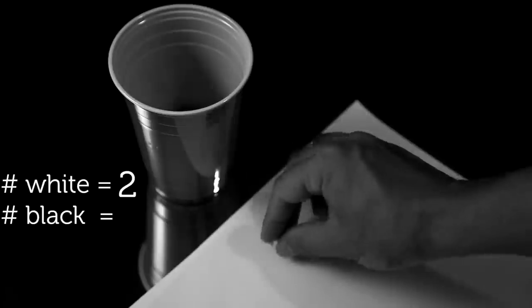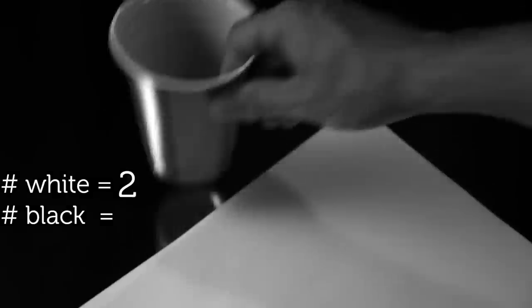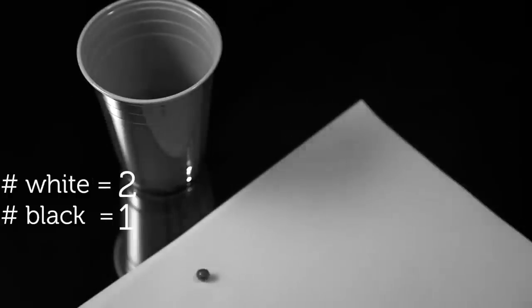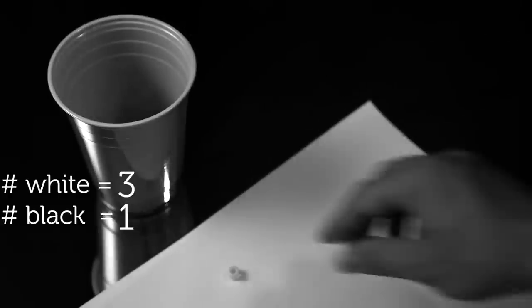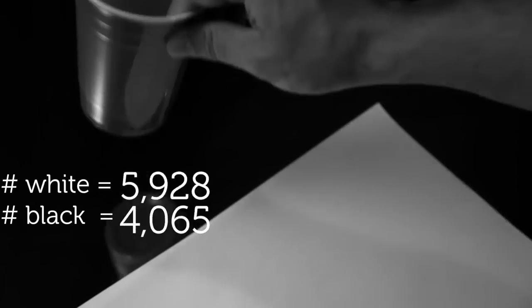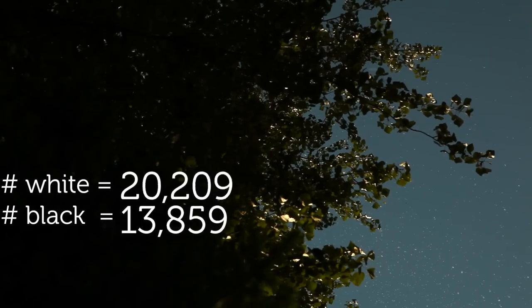He went on to prove that the expected value of white versus black observations will converge on the actual ratio as the number of trials increases, known as the weak law of large numbers.